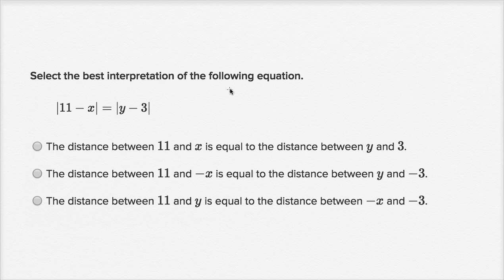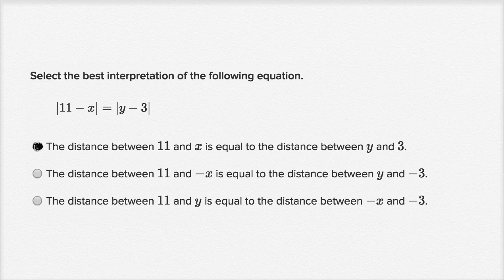Select the best interpretation of the following equation. We have the absolute value of 11 minus x — this is the distance between 11 and x — equals the absolute value of y minus 3 — this is the distance between y and 3. So this is telling us that the distance between 11 and x is the same as the distance between y and 3. The first answer choice says exactly that: the distance between 11 and x is equal to the distance between y and 3. So I would select that.